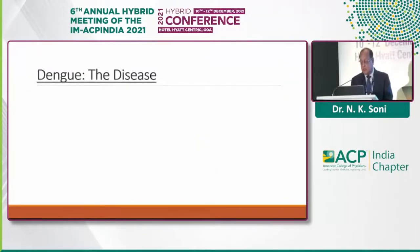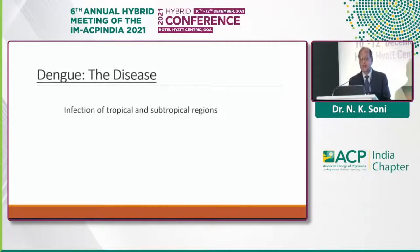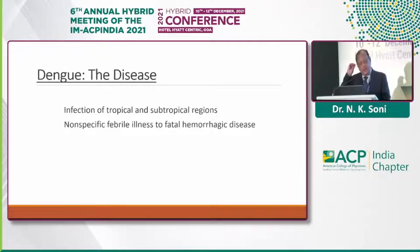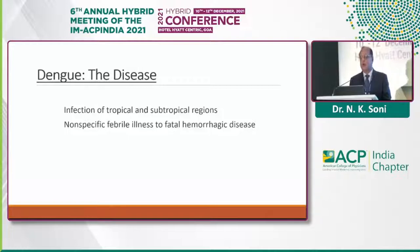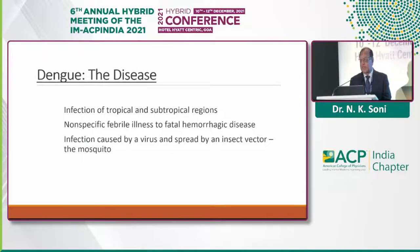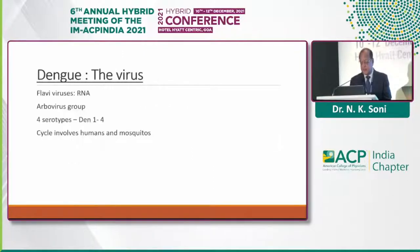For the revision part — dengue, the disease. We know that it's an infection of the tropical and subtropical regions. Our country also falls in that region, which is why dengue fever is so common here. It's a non-specific febrile illness and can lead to even fatal hemorrhagic disease, causing increased morbidity and mortality. It is caused by a virus and spread by mosquitoes. It's an RNA virus with four serotypes: dengue 1, 2, 3, and 4.